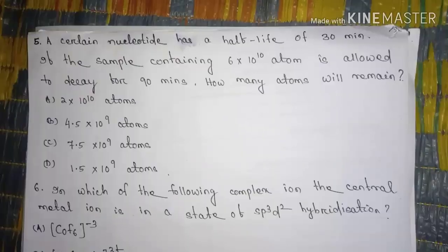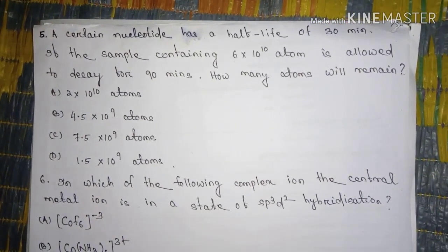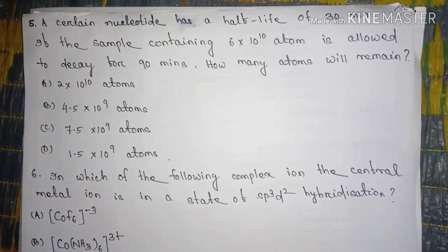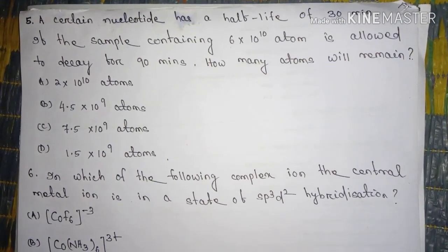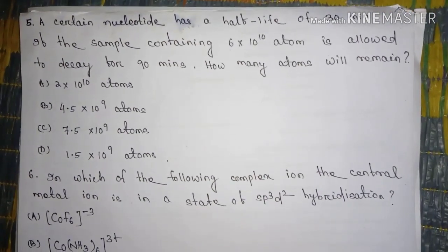For five, a certain nucleotide has a half life of 30 minutes. If the sample containing 6 into 10 to the power 10 atom is allowed to decay for 90 minutes, how many atoms will remain?